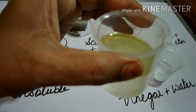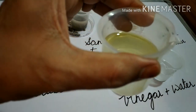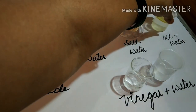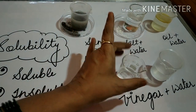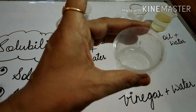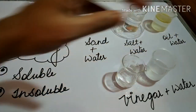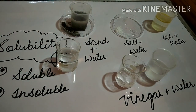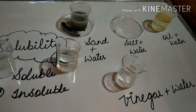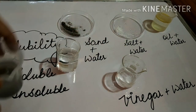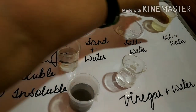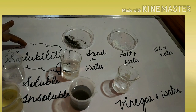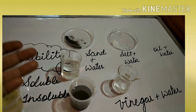Why does oil remain on top of the water? Because oil has less density — it is less dense than water, so it can float and is not mixed. Whereas if you see the vinegar and water solution, it is completely mixed. So we have learned two words: soluble and insoluble. Salt solution and vinegar solution were soluble. Whereas the sand solution was insoluble, and oil and water was insoluble. The materials have the property of solubility — some are soluble in water and some are insoluble.